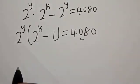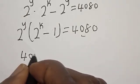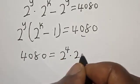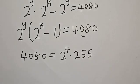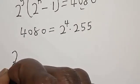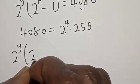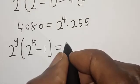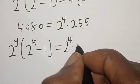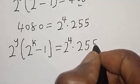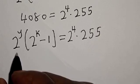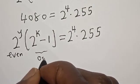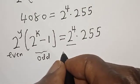Now let's work with 4080. We can write 4080 as 2 raised to power 4 multiplied by 255. So 2 raised to power y times the quantity 2 raised to power k minus 1 equals 2 raised to power 4 multiplied by 255.